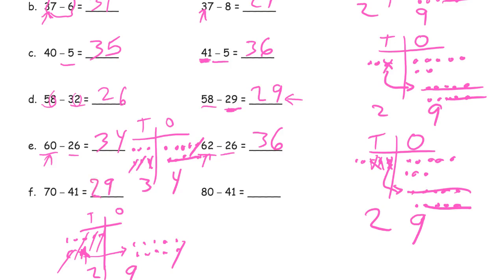And here, if 70 minus 41 is 29, we have the same subtrahend — 41. But if I started out with 10 more, I should finish with 10 more: 39.